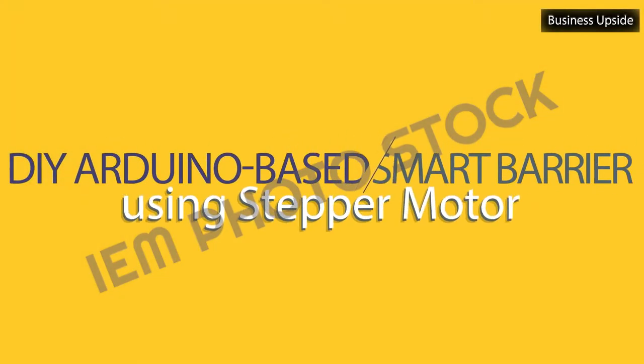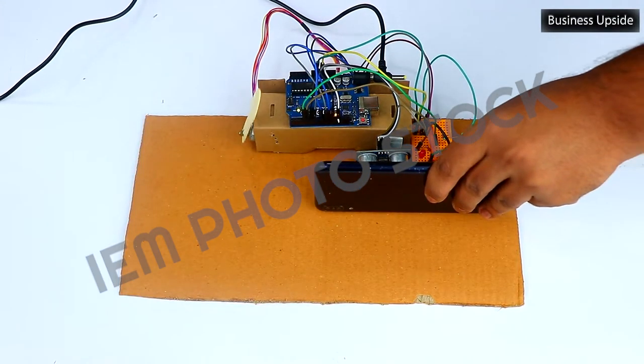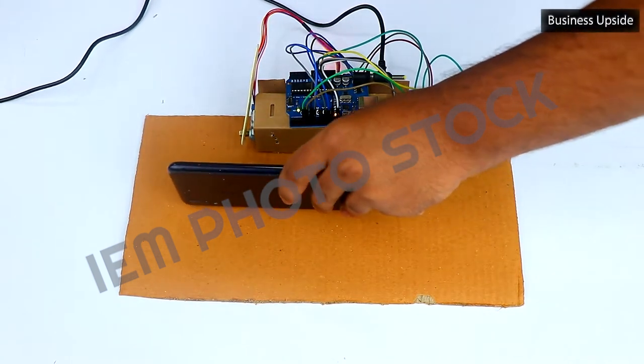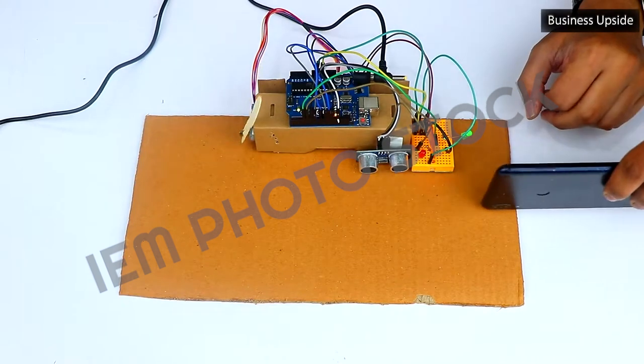DIY Arduino Based Smart Barrier Using Stepper Motor. Have you seen a level crossing or a toll booth barrier? A system that has to be manually opened when cars pass and closed when a train passes. Wouldn't it be great if you could make it smart and automatic?